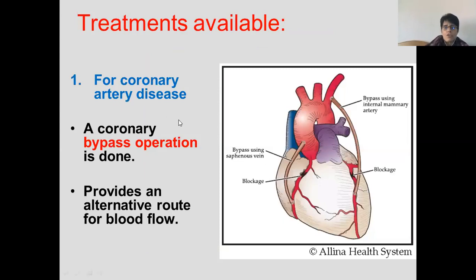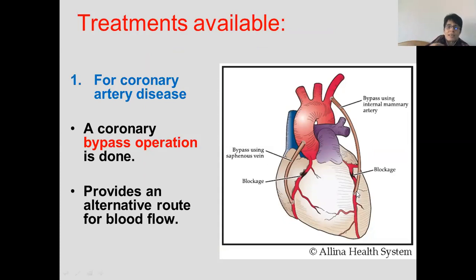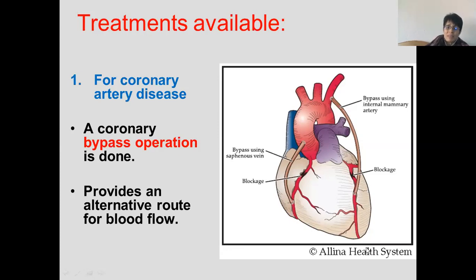What are the treatments available for coronary disease? You could have a bypass operation, shown in one of the video clips, where they take leg veins. This person is having a double bypass because two little coronary arteries are blocked. They take two leg veins so that oxygenated blood from the aorta can bypass the blockage — just like if you're building a road and you take a detour around a blocked stretch. It provides an alternative route for blood flow so that the heart muscle below still receives oxygen.